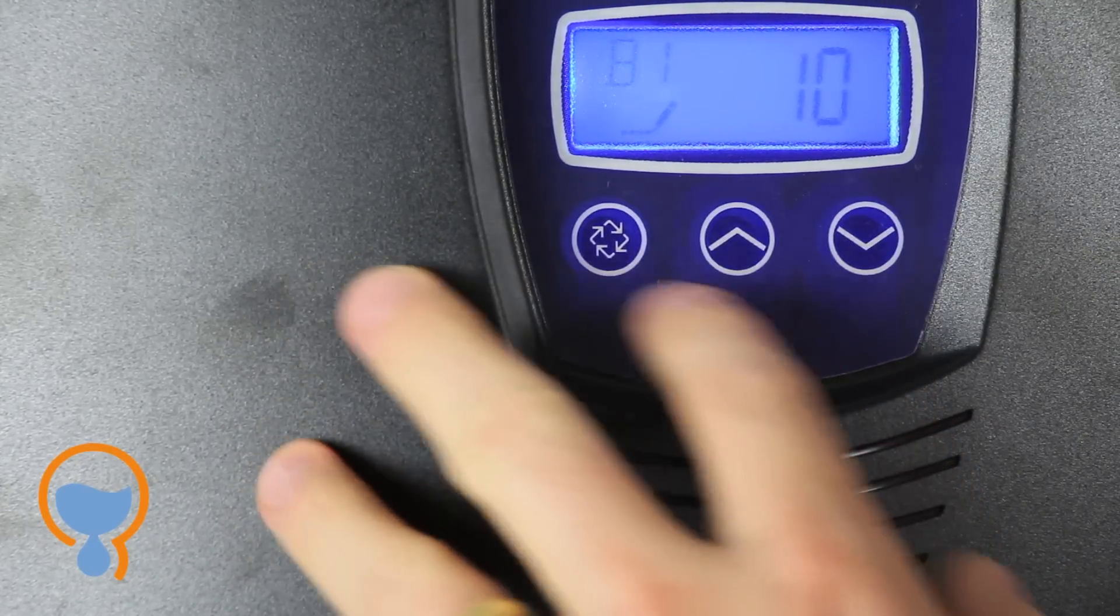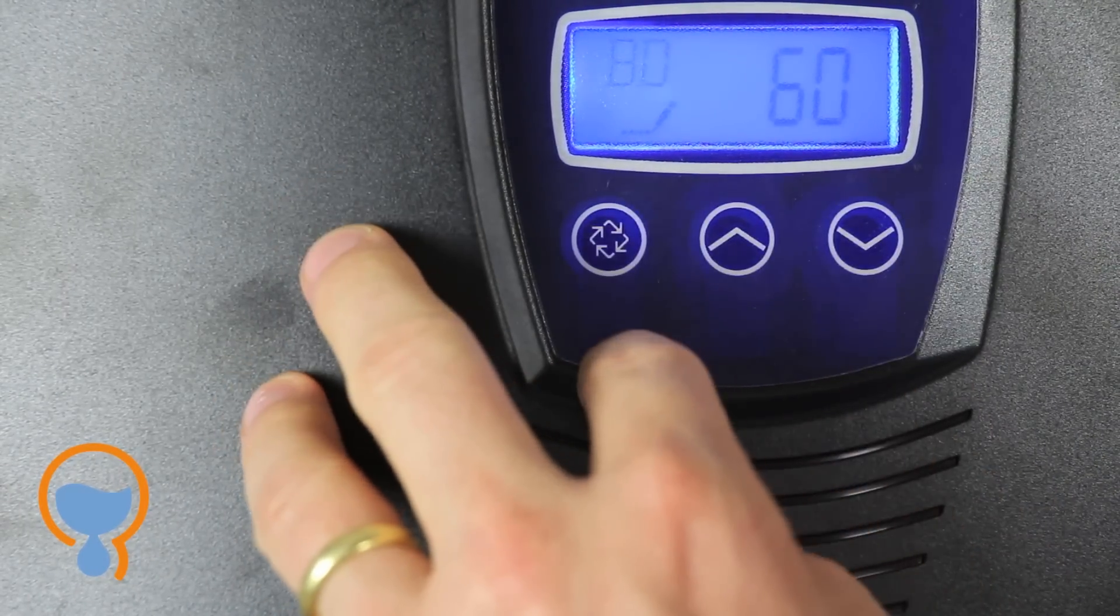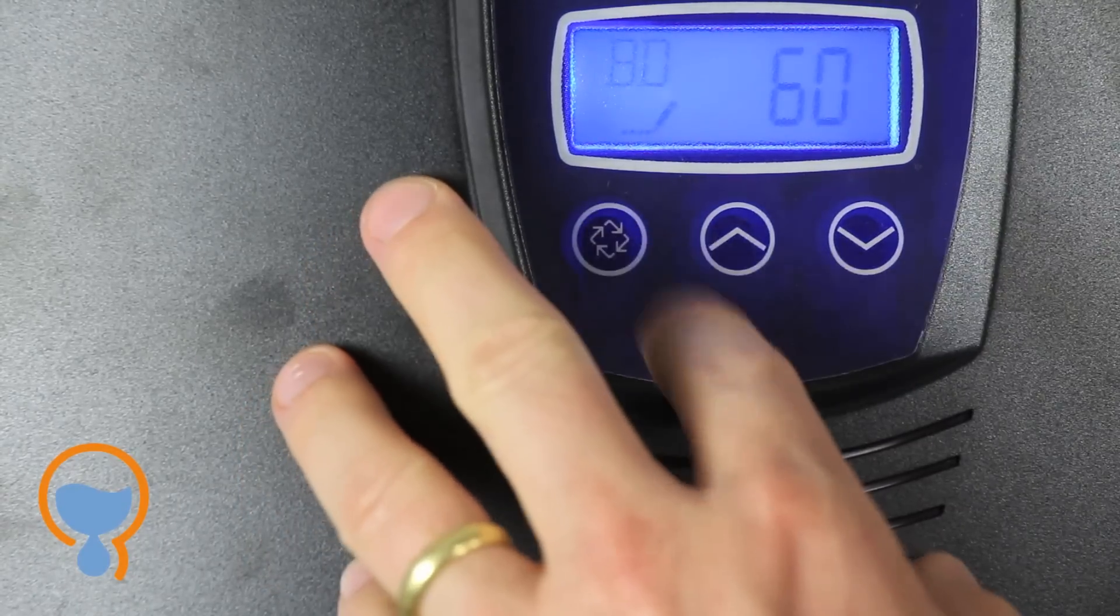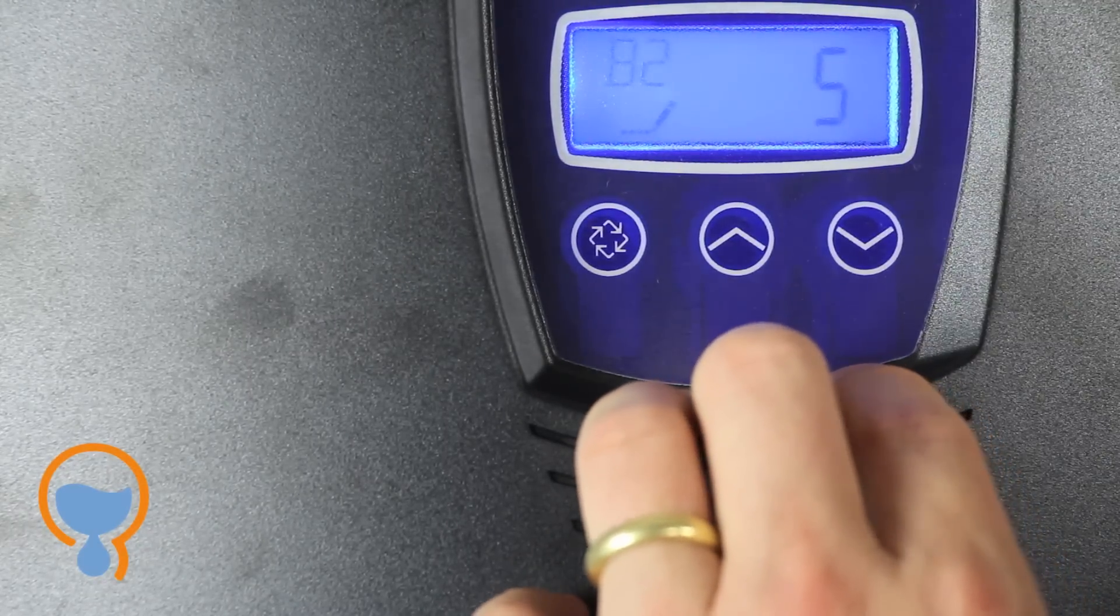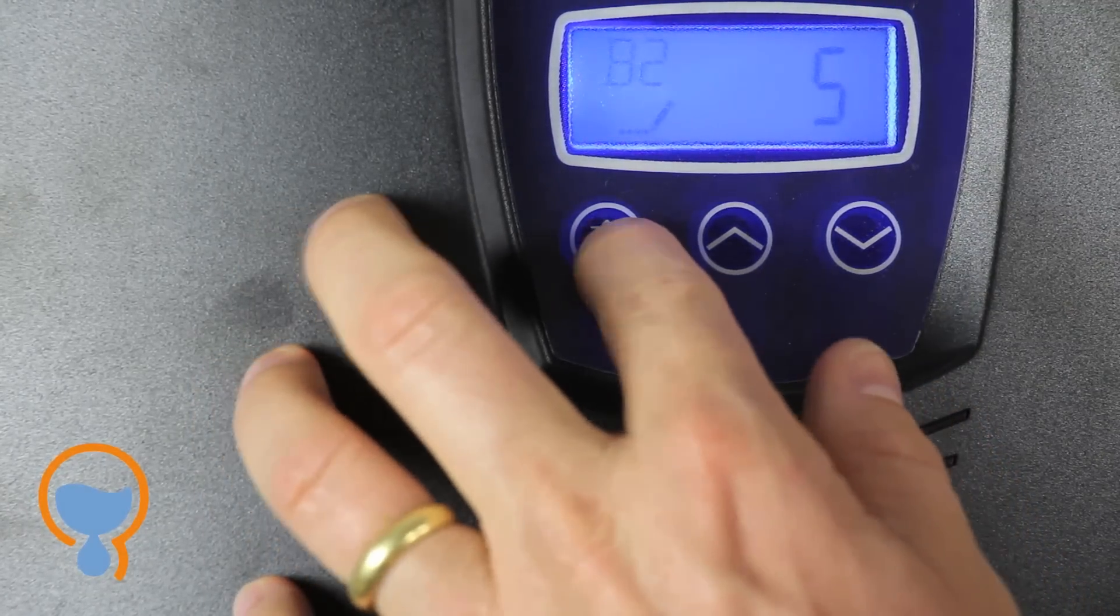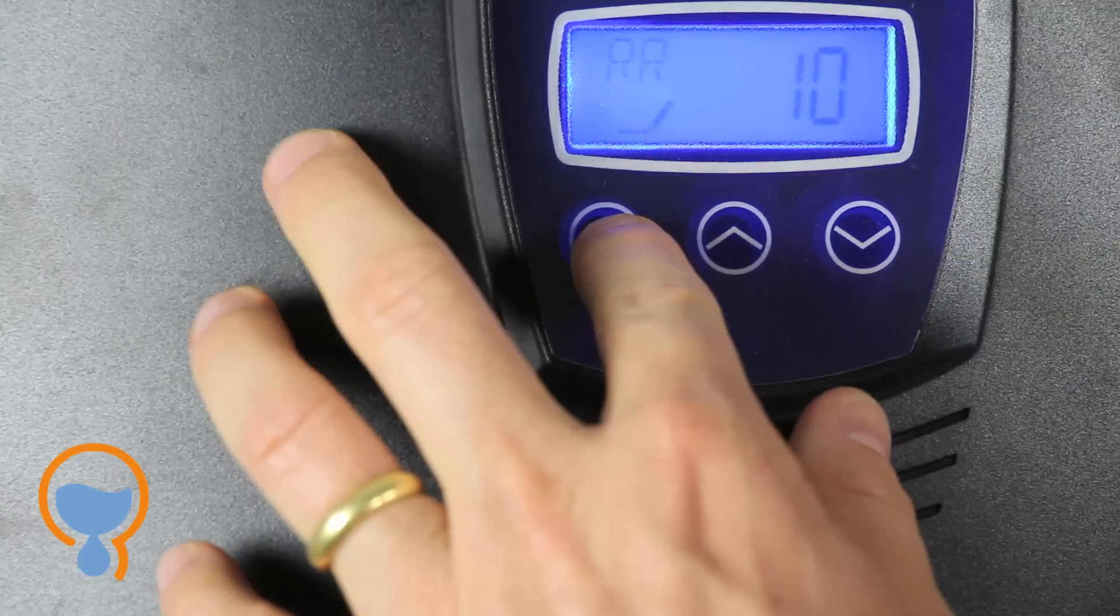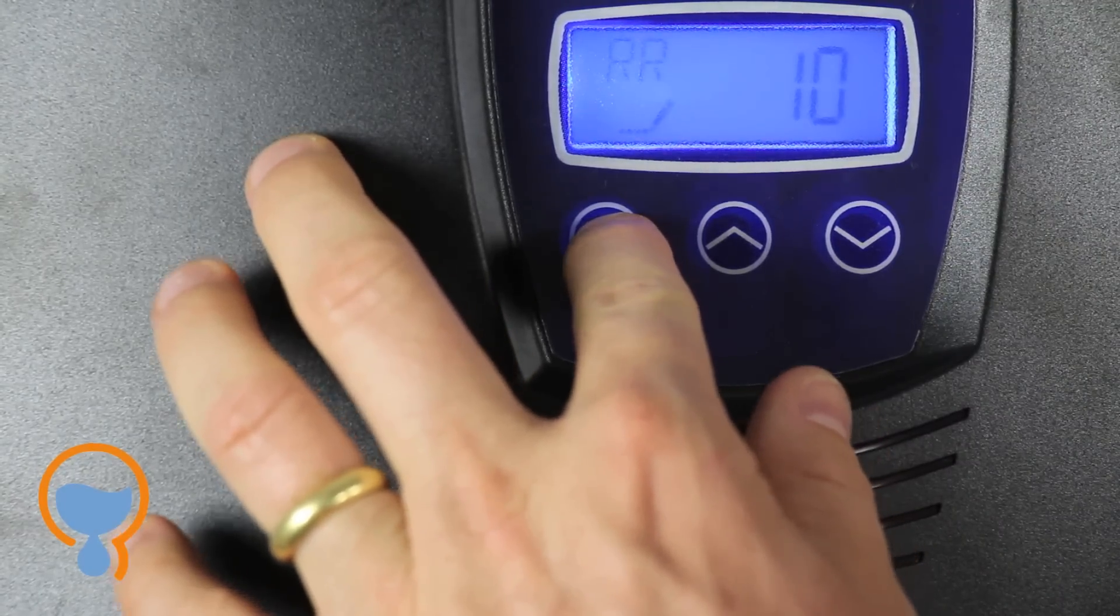Backwash 1 is defaulted to 10 minutes which is perfect. We'll press enter. The brine dry is 60 minutes which again is perfect. We'll press enter. Backwash 2 is 5 minutes. Perfect. We'll press enter on that. Rapid rinse 10. Again, the default is the setting that we want. So 10 minutes we'll press enter on.